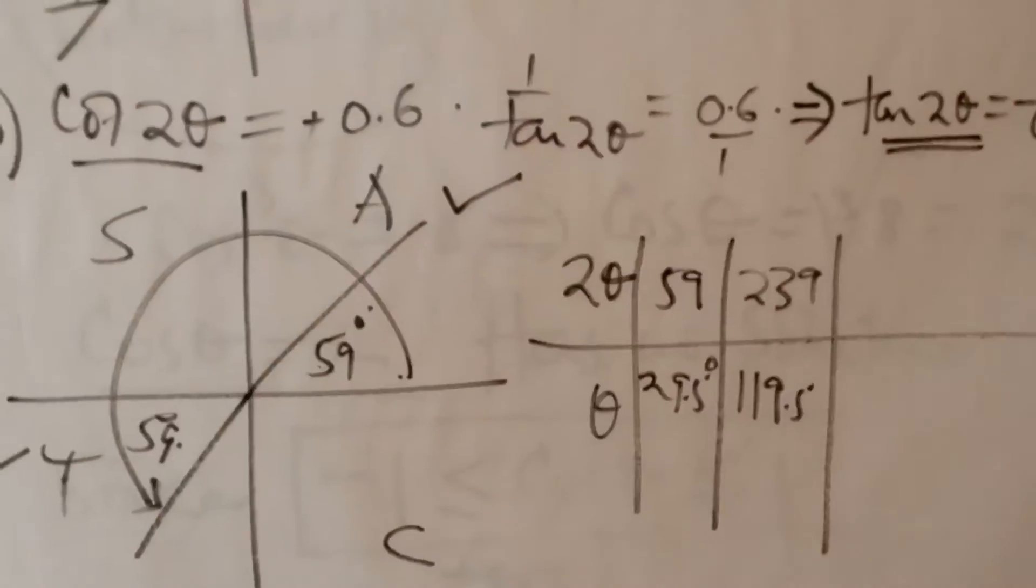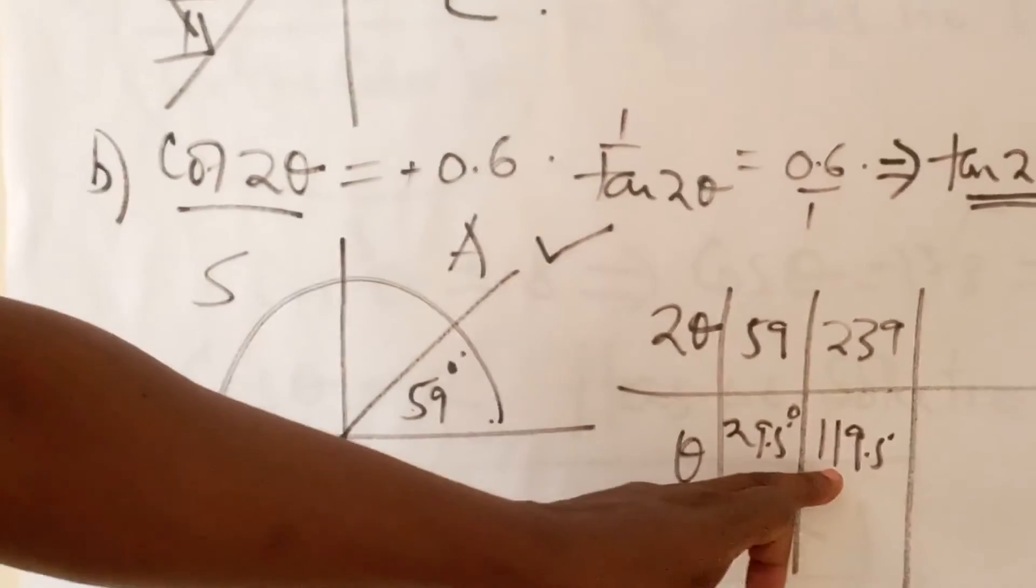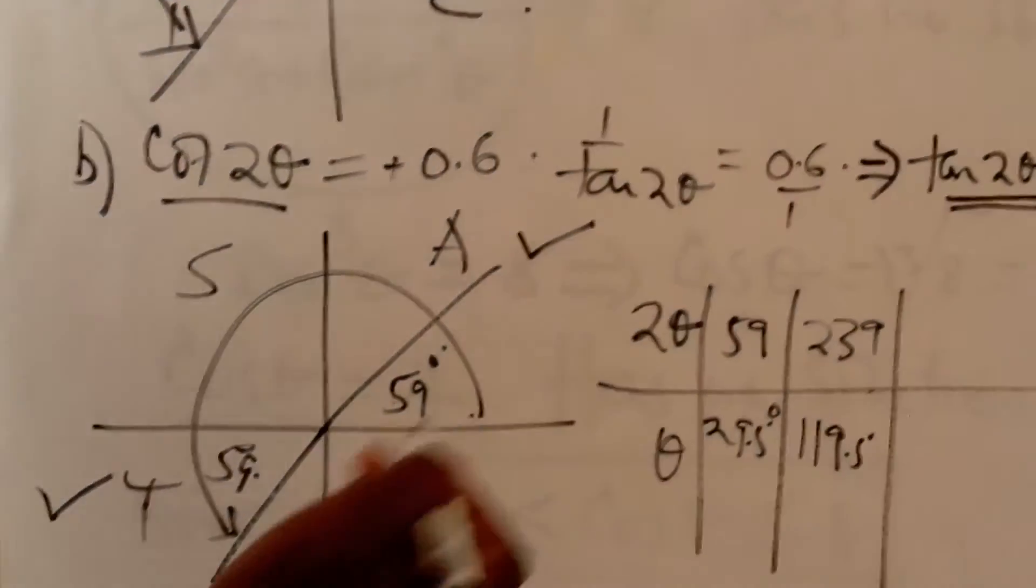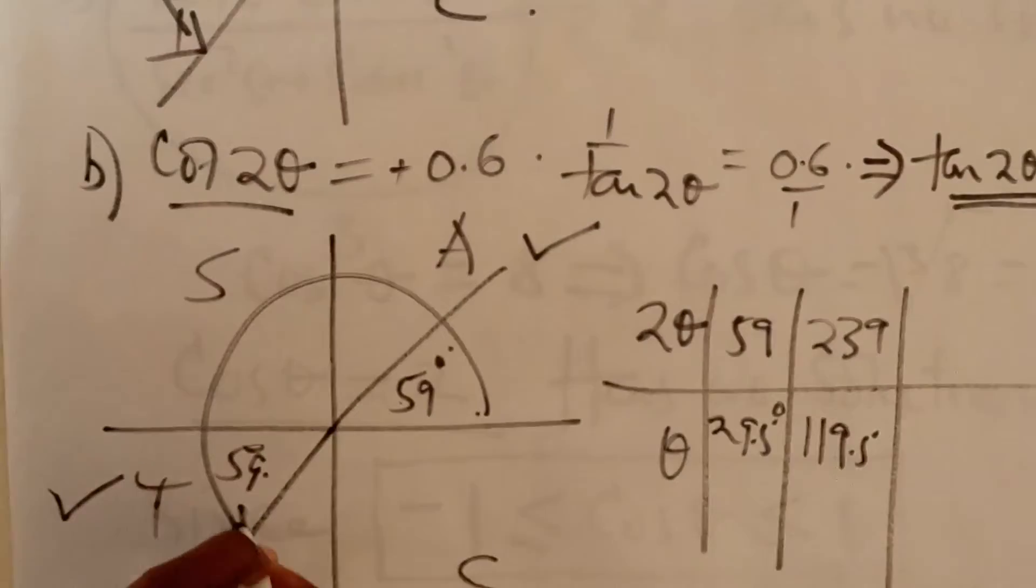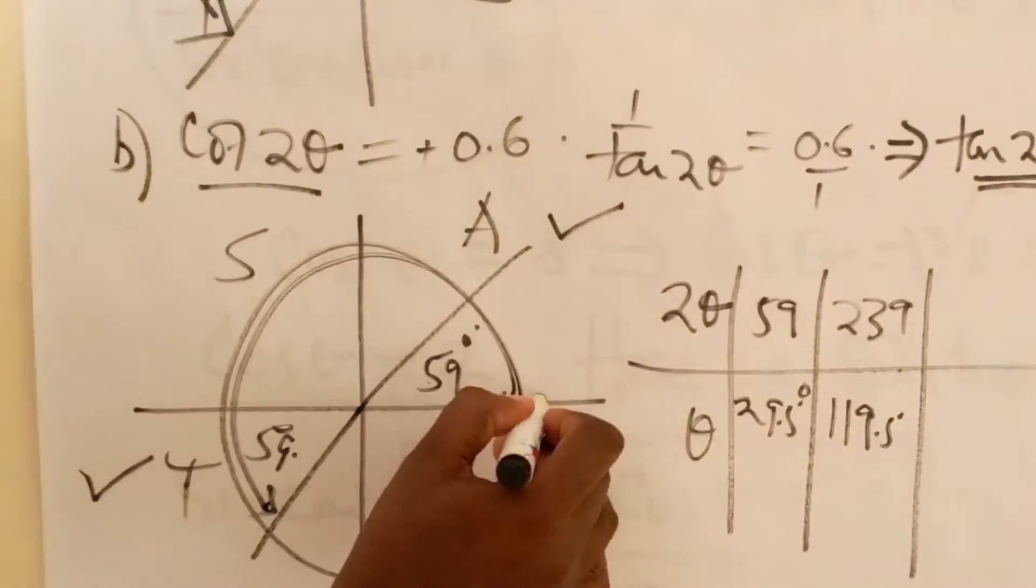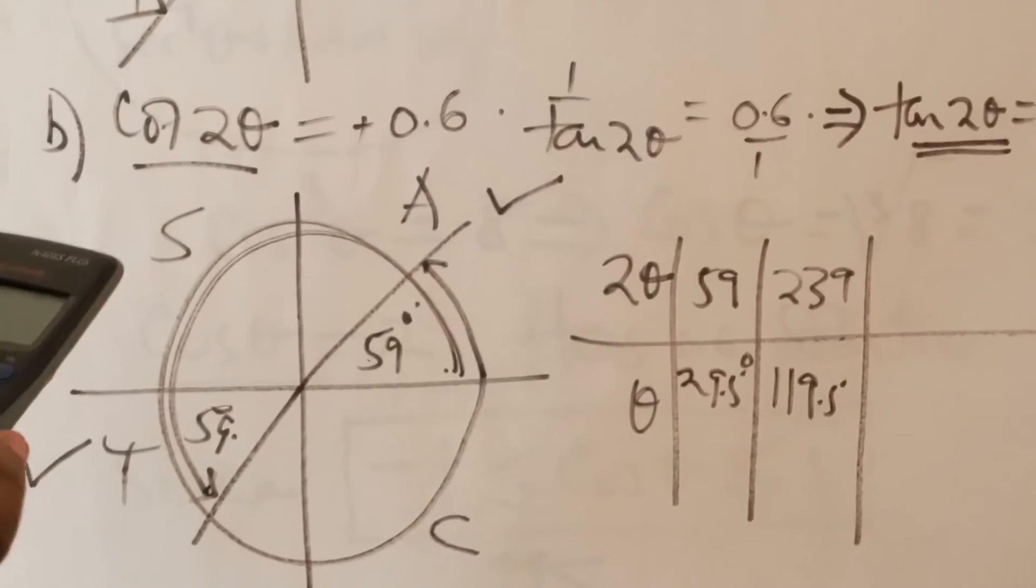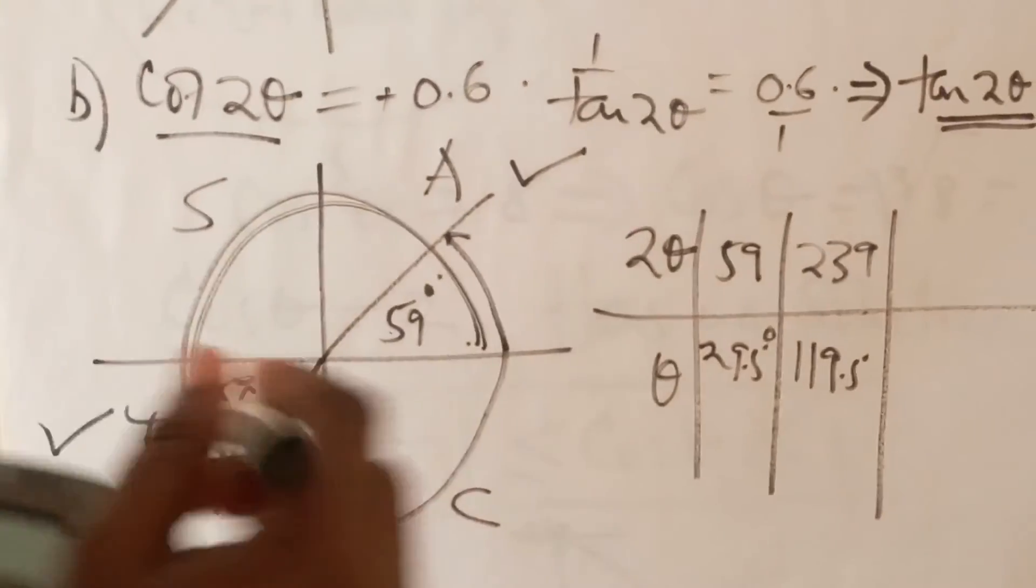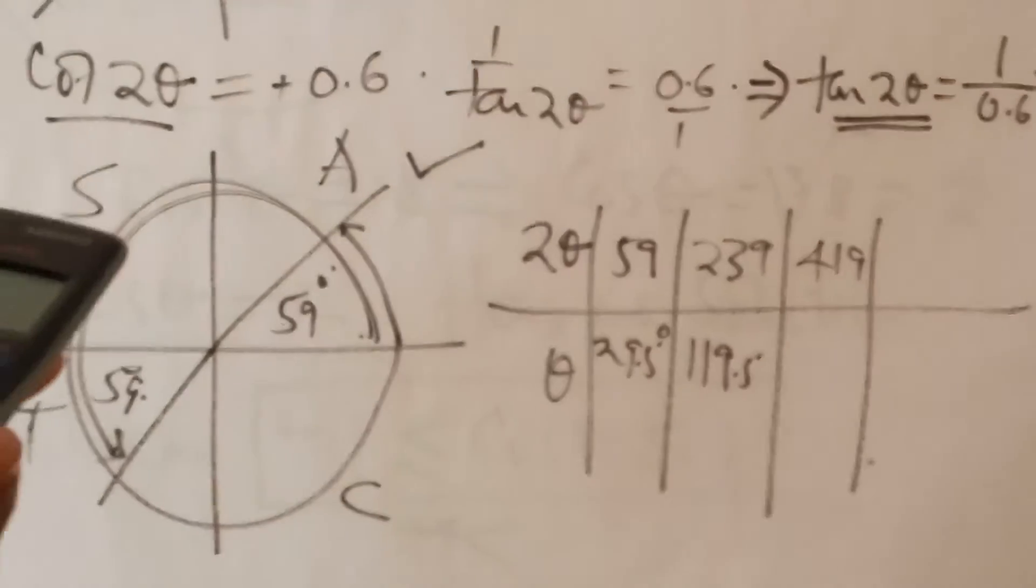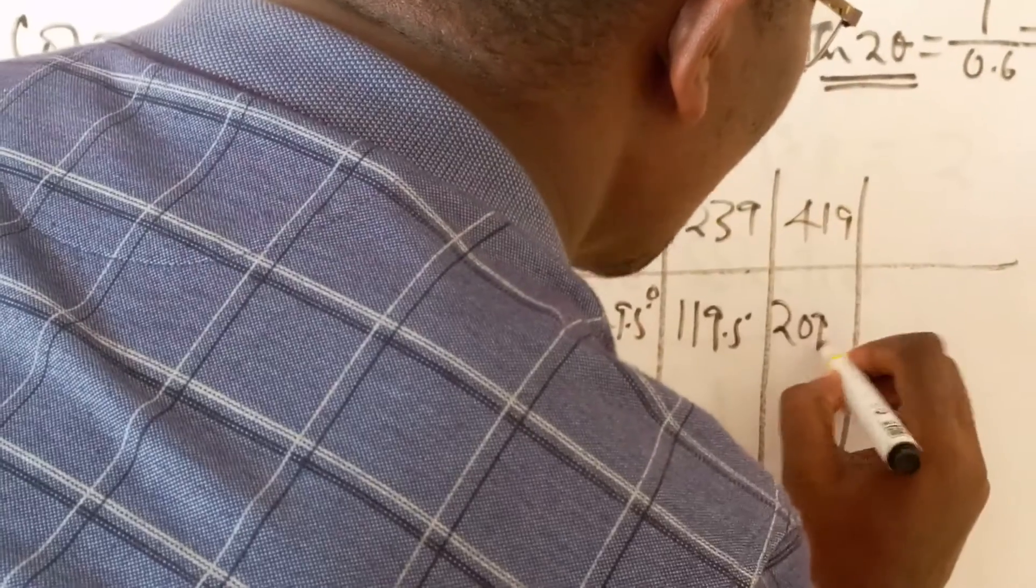Because the range is between 0 and 360, we are still very far. If you consider 119.5 degrees, we are still very far from 360. So we need to engage the second circle. We are going to have 360 plus 59, which is 419. 2 theta can be 419, and 419 divide by 2, you are likely to have 209.5.